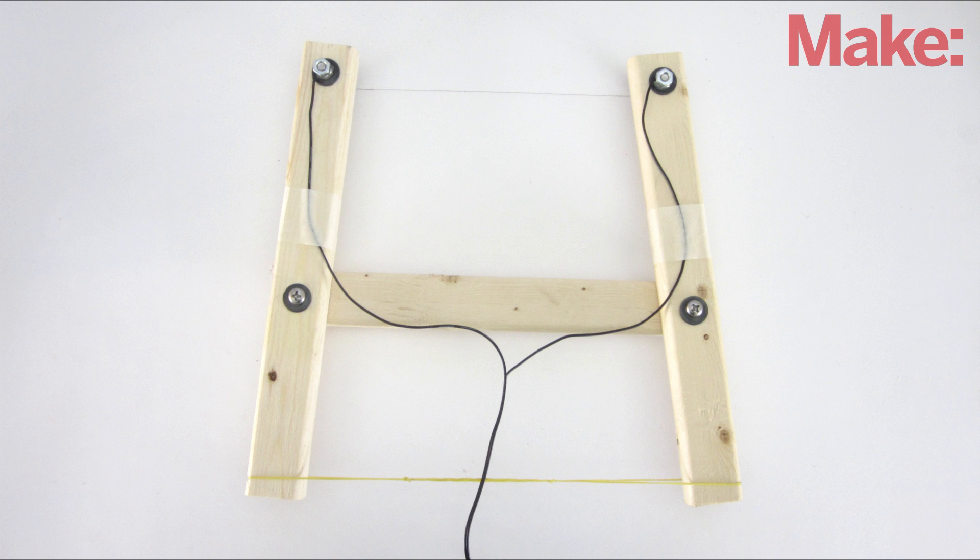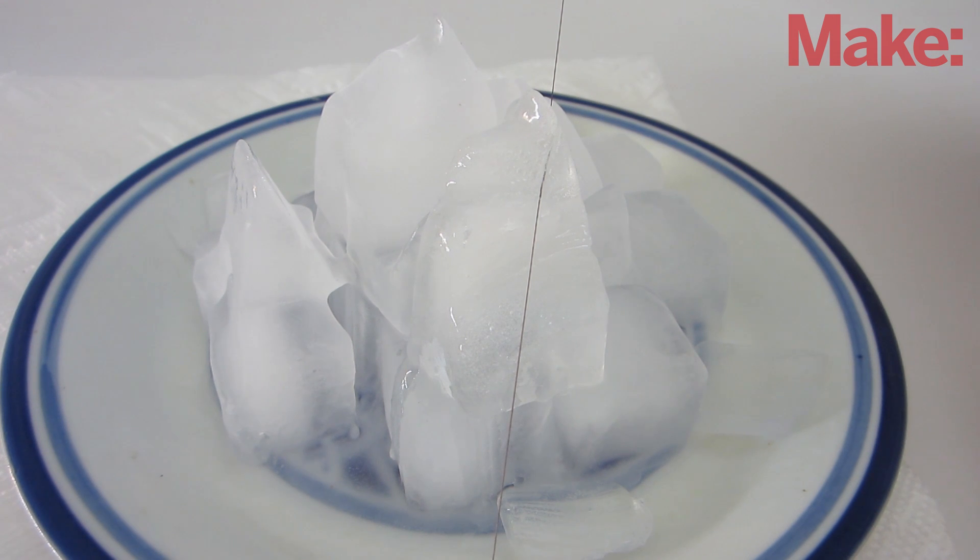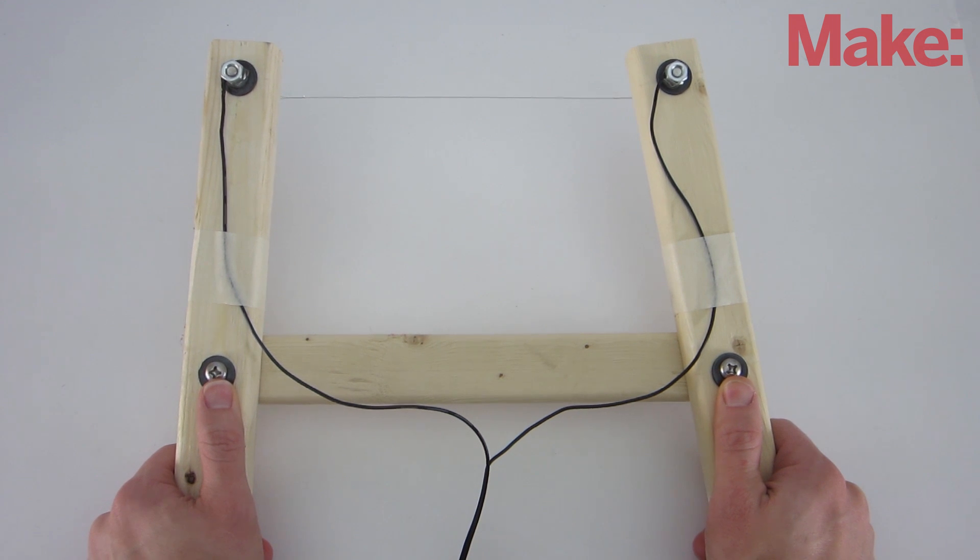The basic design is the same as any other hot wire cutter. Electricity is used to heat a piece of nichrome wire, and this can be used to precisely melt a line through whatever material you're working with. To make it easier to work with large blocks of ice, I decided to make this cutter handheld instead of mounting it to a table.